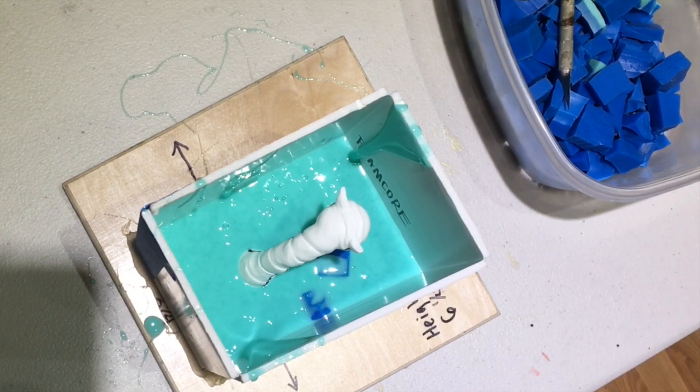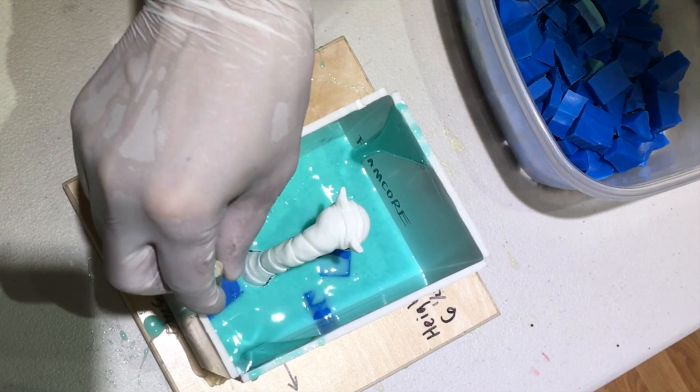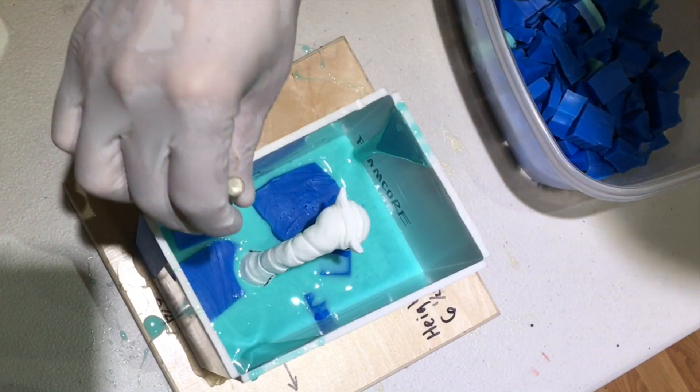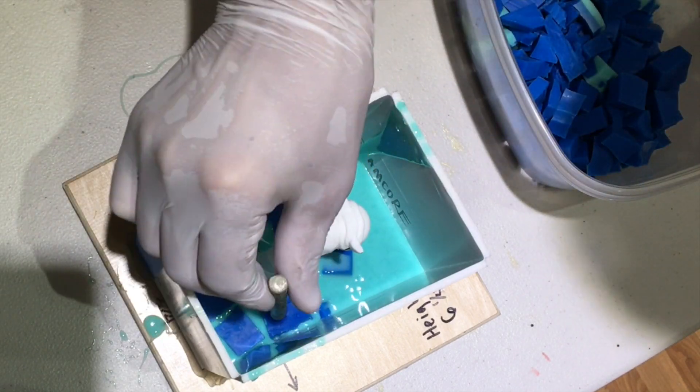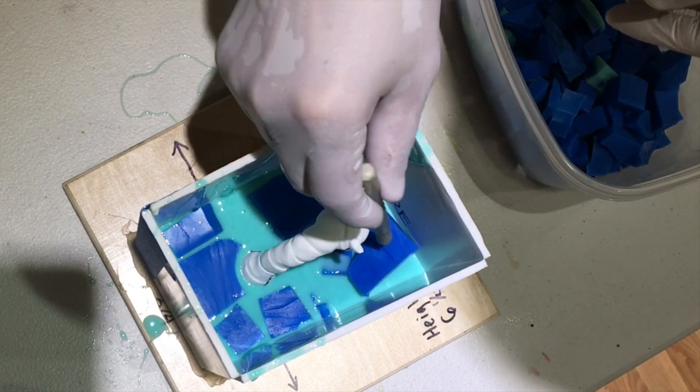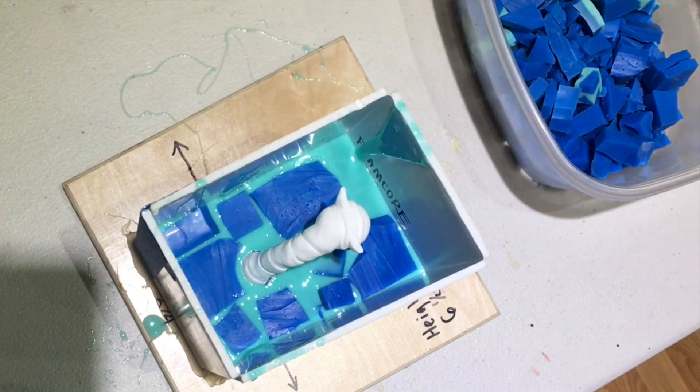I'm barely stabbing an X-Acto knife into each little piece and then setting it into the silicone and then twisting the X-Acto knife out. I try to make sure that each one of the little chunks is completely surrounded by silicone on each side. And I also try to make sure that the little chunks don't actually touch the sculpture.